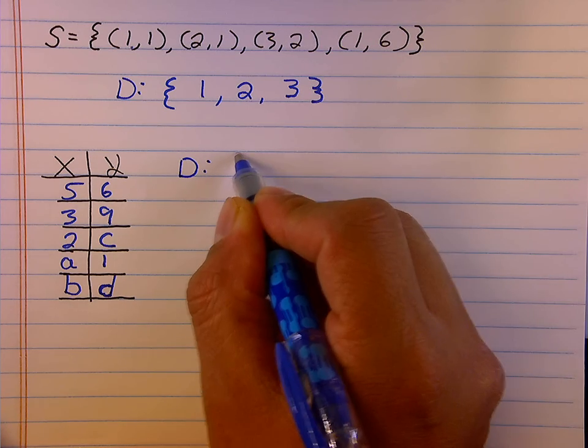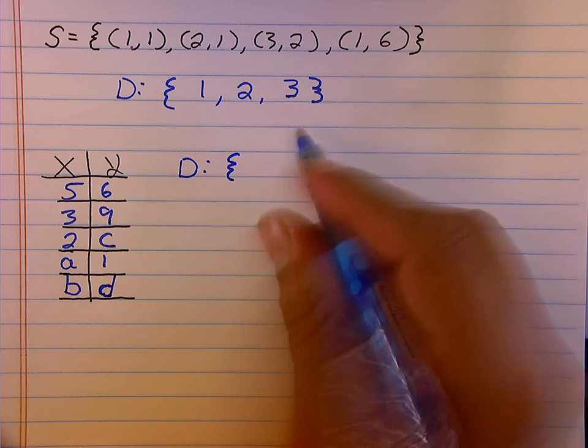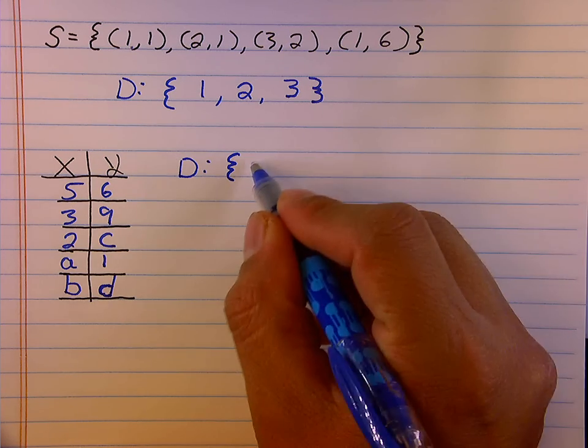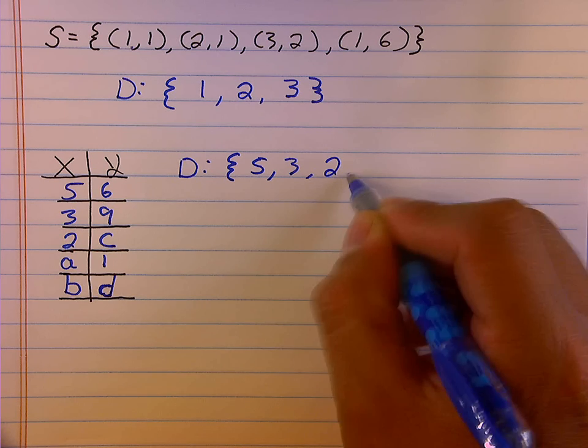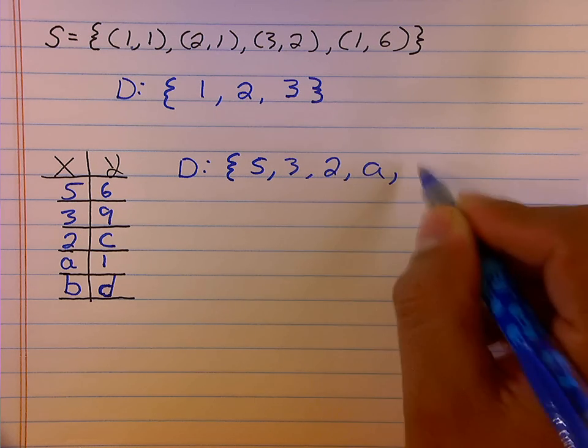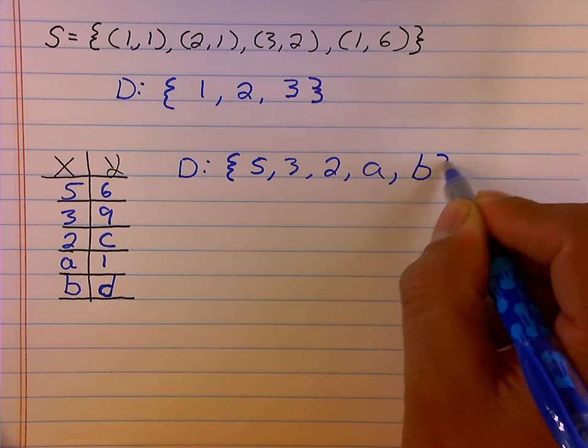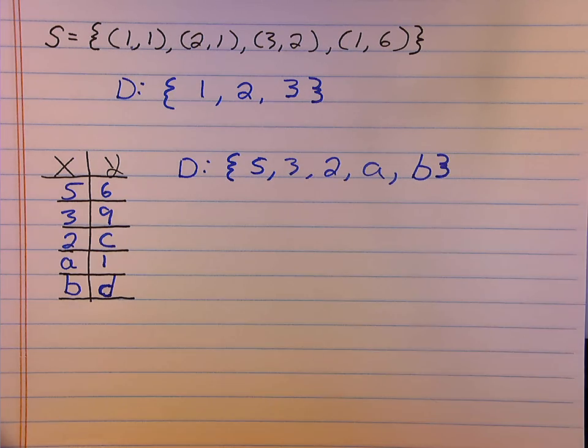In this situation, my domain is going to be the set of x values such that I use 5, 3, 2, A, and B are also input values. So any of these values can be used as the input. That makes up my domain.